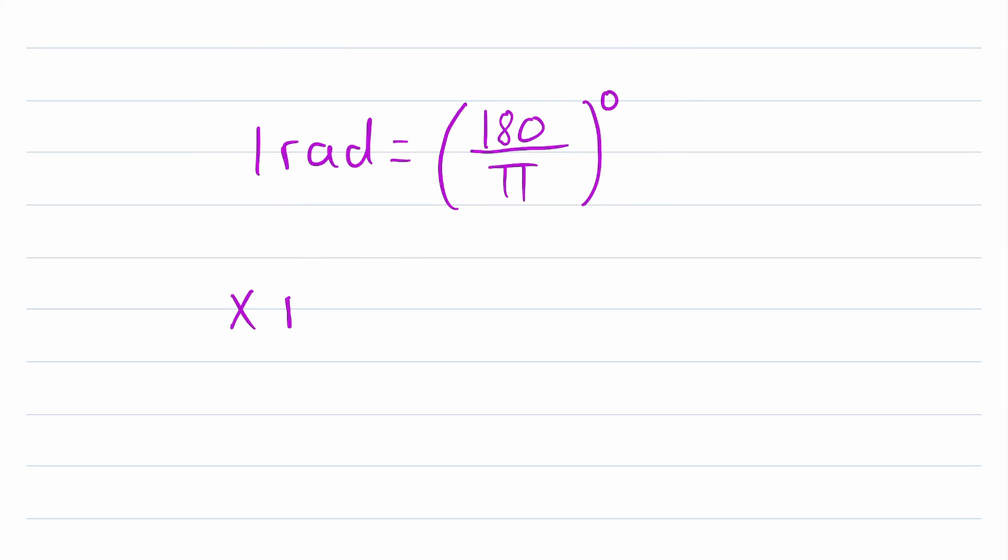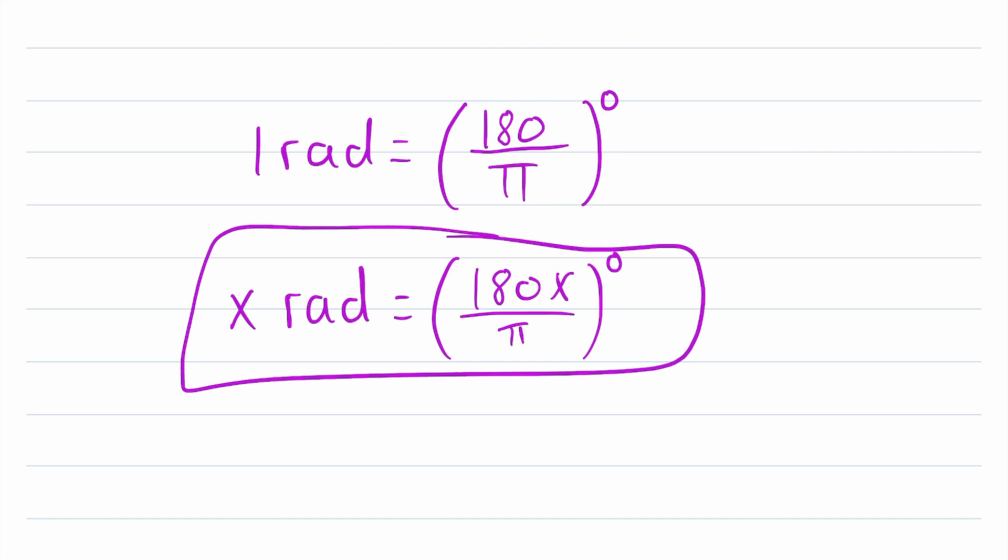We could rewrite this equation as x radians equals 180 times x over π degrees. And this is really just what I was saying before. If you want to convert x radians into degrees, you multiply this side by x, which gives you x radians. And you multiply this side by x, which gives you 180x over π degrees. And I think some people might prefer it written this way.